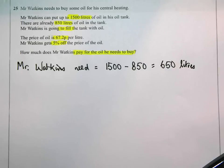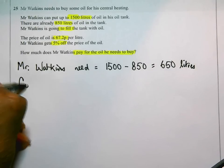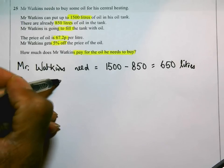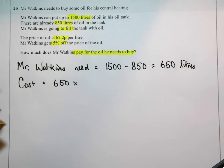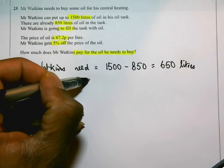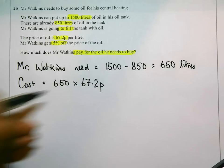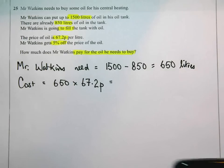So he needs to buy 650 litres. The cost of this is going to be 650 litres. And every single litre costs him 67.2 pence. How much is that altogether?